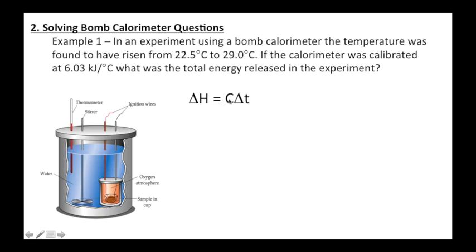mc delta T, or in this case, C delta T. So to find C delta T, we then take the C which they gave us, 6.03 kJ/°C, times by the temperature change of 6.5, cancel our units.